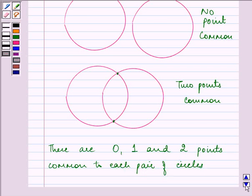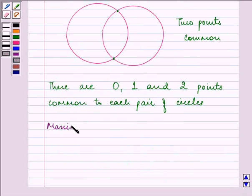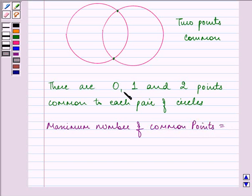And the maximum number of common points is, out of 0, 1, and 2, which is the highest,